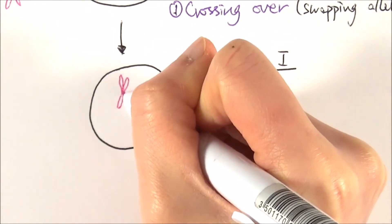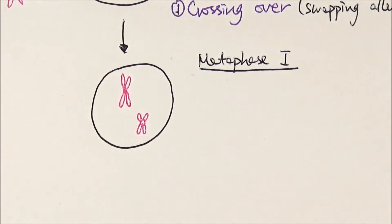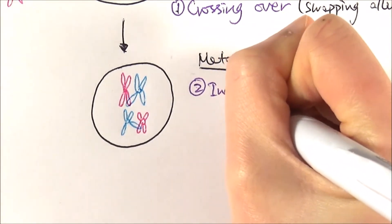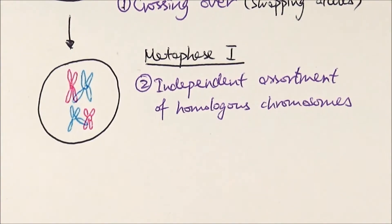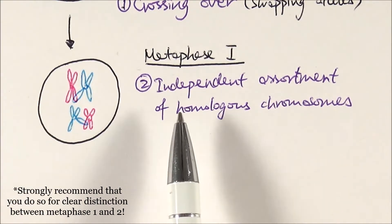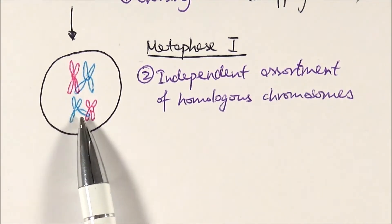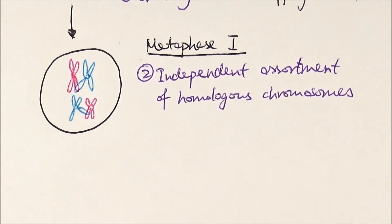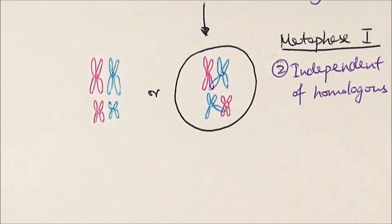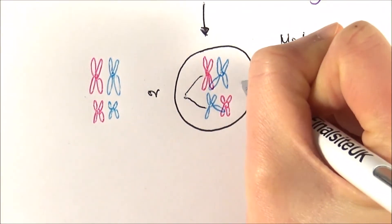In metaphase one, the bivalent — the homologous chromosome pairs — move to the equator, which is the centre of the cell, and line up. This is the second stage where we can get genetic variation, called the independent assortment of the homologous chromosomes. It's important when answering questions to specify what kind of independent assortment it is. 'Independent' means random and 'assortment' means arrangement, so we can have the mum's chromosome on either side of the equator, leading to different arrangements.